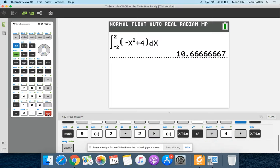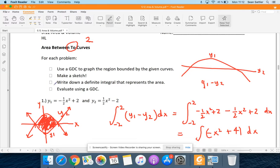And this is going to spit out the area, ten and two-thirds. So this area is equal to ten, and let's just do ten-point-six repeating, okay?